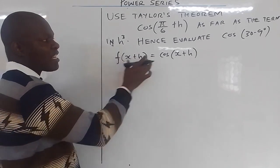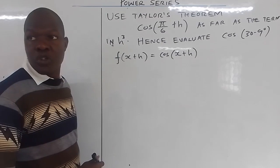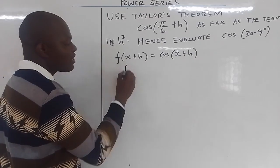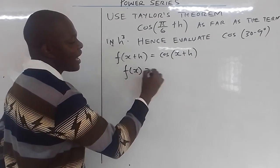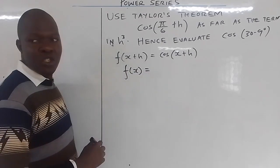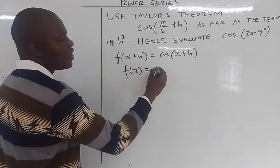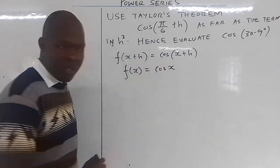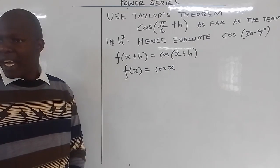If f(x + h) equals cos(x + h), then it means that f(x) equals what? When h is 0, it means f(x) equals cos(x).